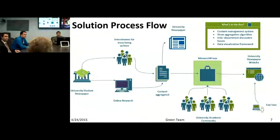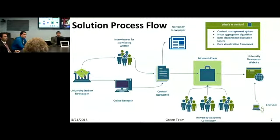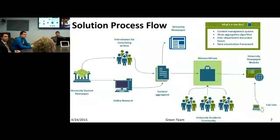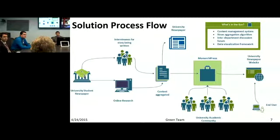Here is the solution process flow with Monarch Press. Nothing really changes up until the point where it's time for the content to be pushed to the university newspaper website. The content gathered through online research and interviews is still fine to be pushed to the newspaper. But when it's time to get that content to the website, we need our product, which will have a content management system with a page layout engine to dynamically create new web pages, a news aggregation algorithm, an inter-department discussion forum, and a data visualization framework.